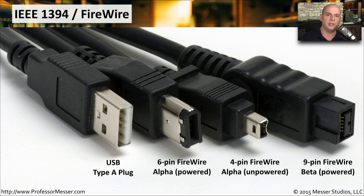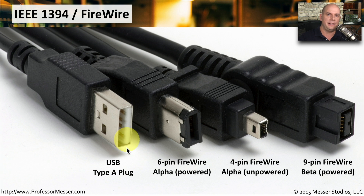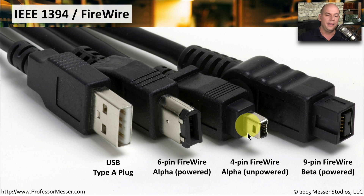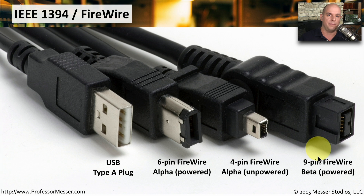A picture shows the FireWire interfaces alongside a standard USB Type-A plug for size comparison. FireWire 400 comes in a 4-pin and a 6-pin version. The 6-pin version allows power to be sent through the cable so the remote device may not need an extra power source, while the 4-pin version carries the same FireWire signal but without power. Faster equipment may use the 9-pin FireWire Beta connector running at 800 megabits per second.